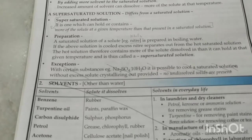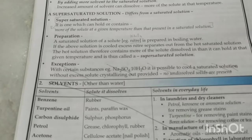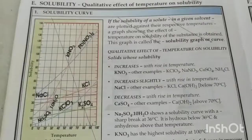In this case, the cold water will have more potassium nitrate dissolved in it than it ideally could — meaning it is more saturated than a normal saturated solution of potassium nitrate prepared under normal conditions. Such a solution is called a supersaturated solution.